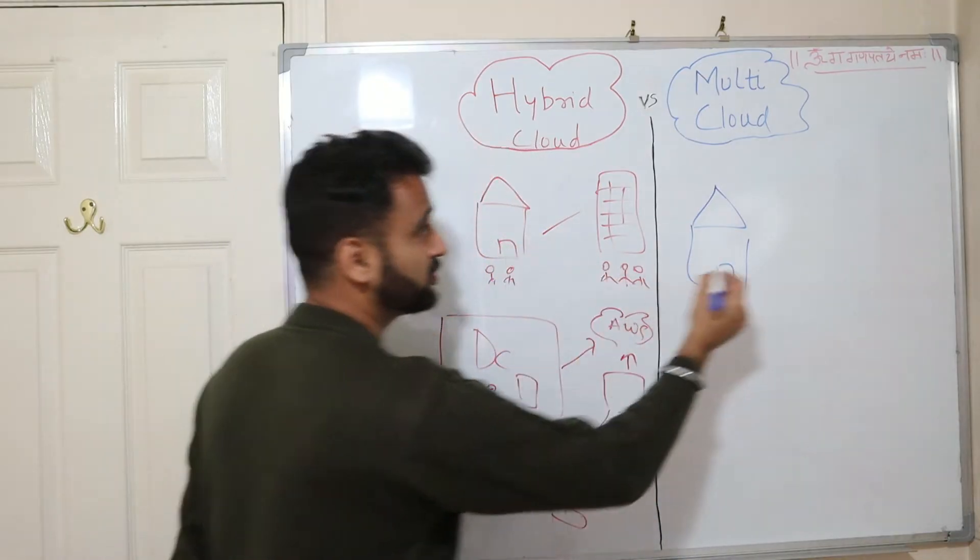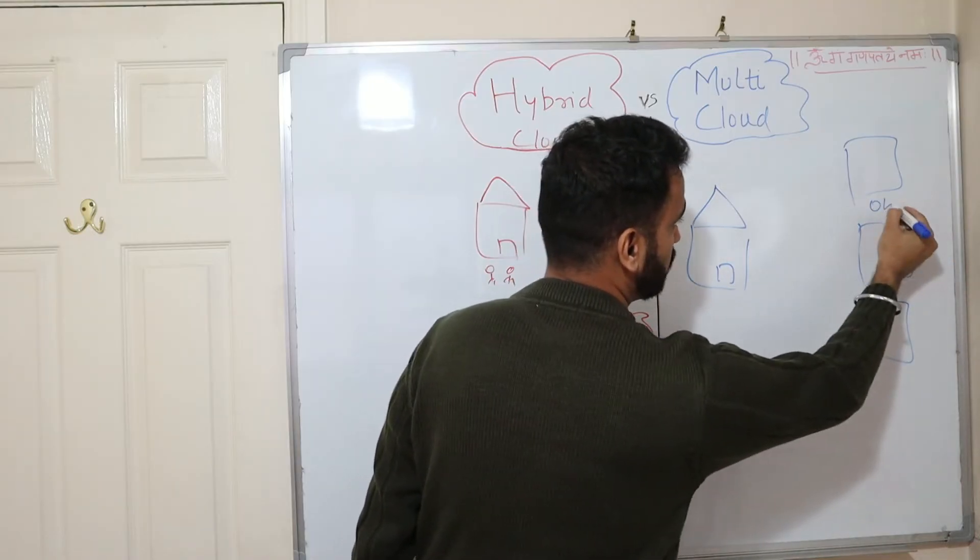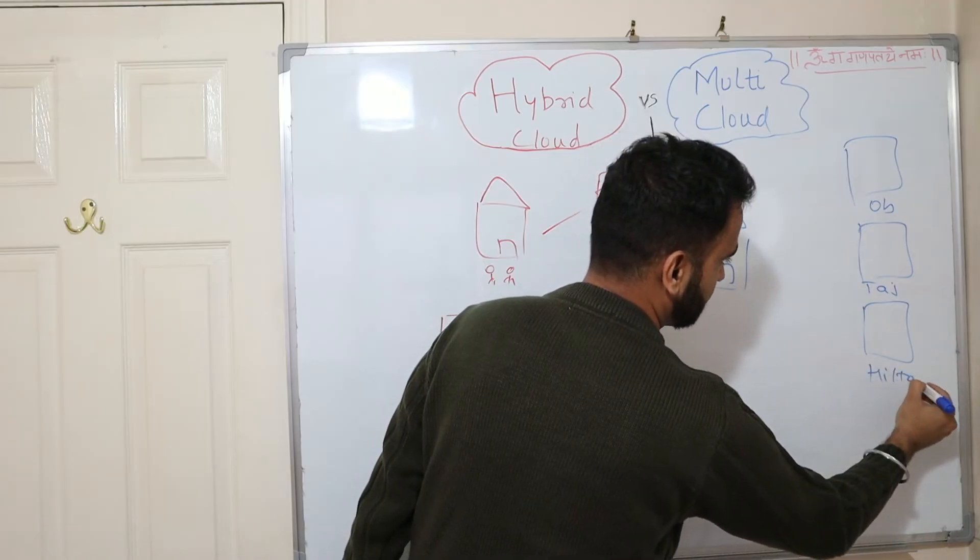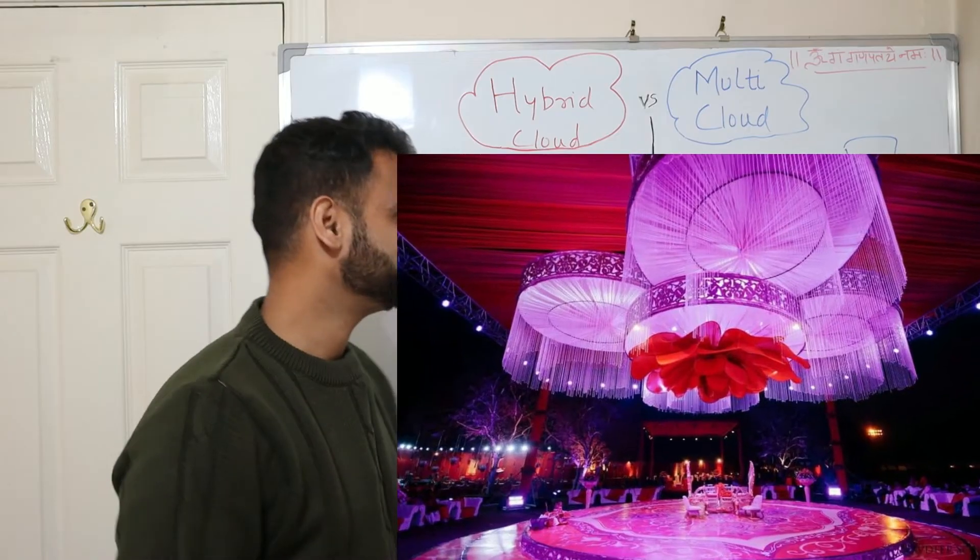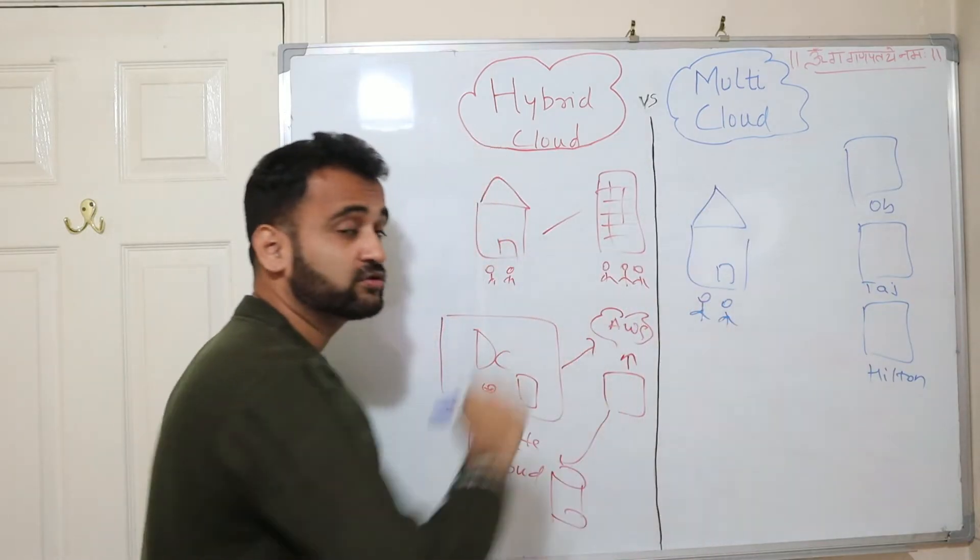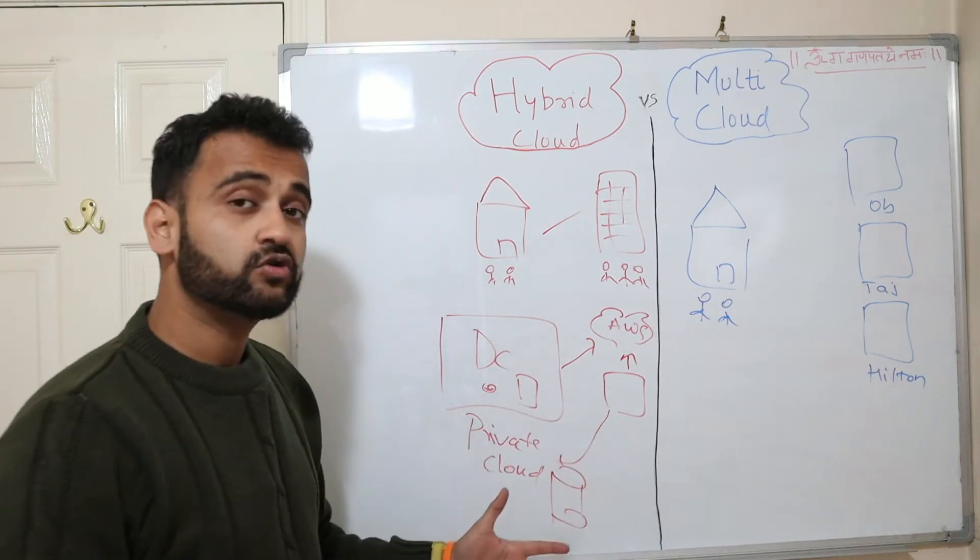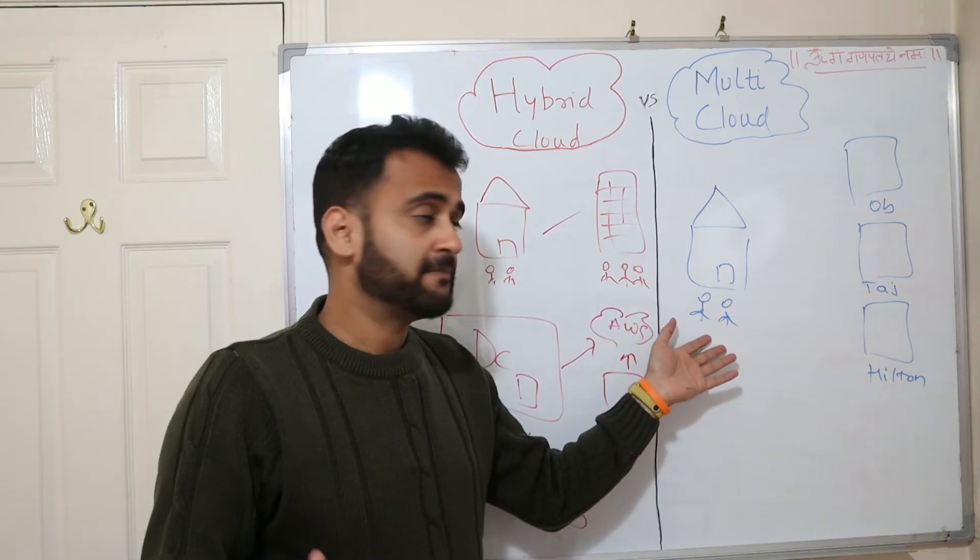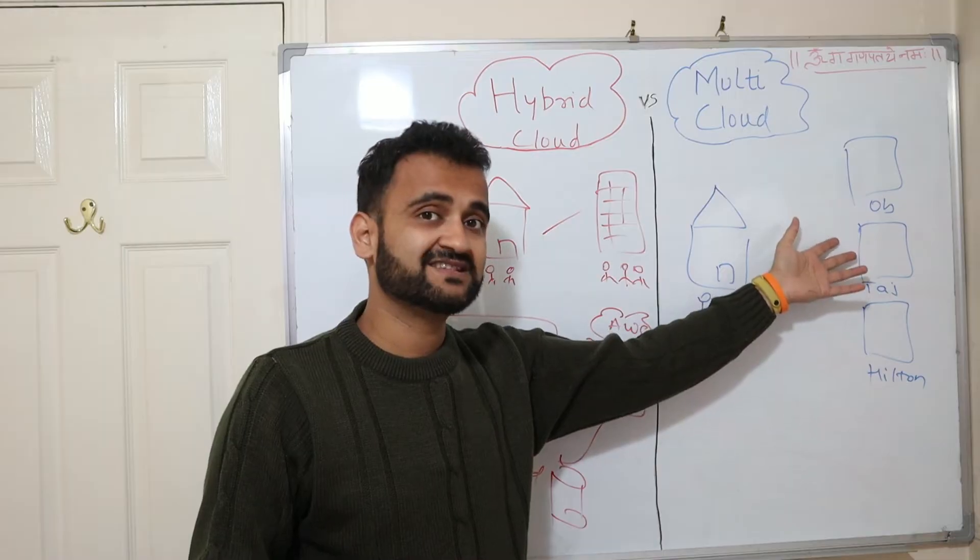So suppose the same house is arranging the marriage, but this time the difference is instead of booking one hotel, they have booked three different hotels. And these could be Oberoi, Taj, Hilton. This is a big fat wedding, by the way, which is very famous in Indian culture. So this family has booked three different hotels. Now the question comes: what's the need?